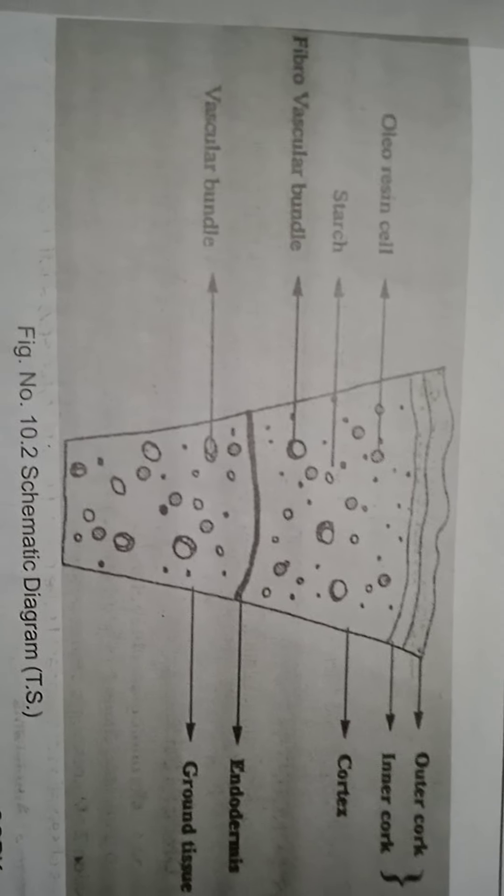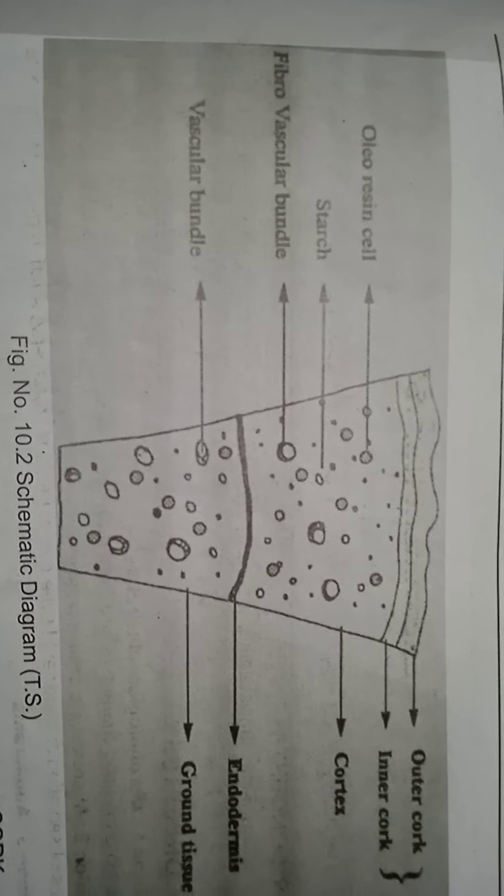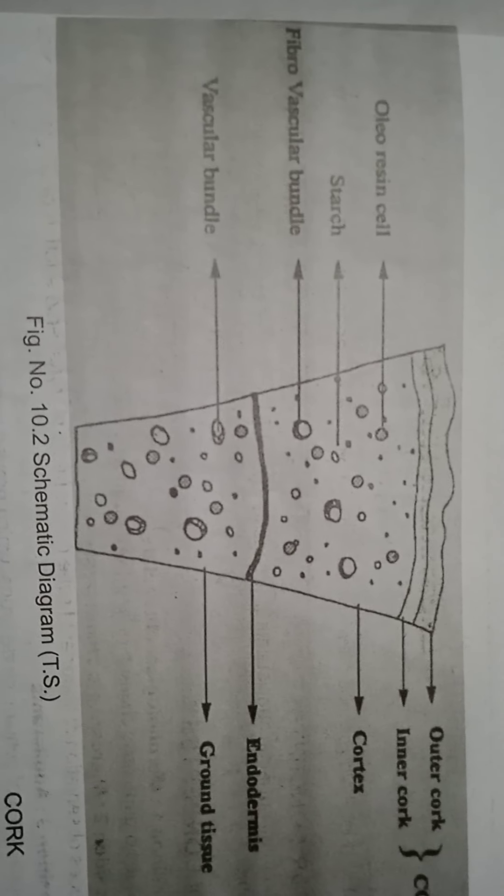Here you can see this is a ginger plant, and the rhizome of the ginger is shown. This is a schematic diagram of the transverse section of this drug — the TAS of this ginger rhizome.